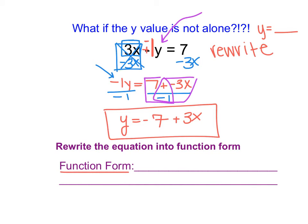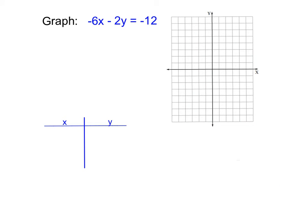This form is commonly called function form — function form is when y is by itself. So when I say to write something into function form, you're going to write it into y equals form. We do that to make graphing with a table easier, so we can pick values for x and find corresponding values for y. Here we have another equation to graph, and we notice that the y value is not by itself, so we need to rewrite it into function form first.